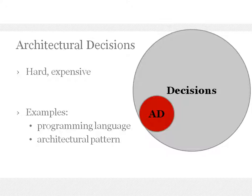What are architectural decisions? They are decisions which are hard to make and expensive to change. For example, what programming language are you going to use for your new project, what architectural patterns to use, middleware, and so on. They are a subcategory of decisions.